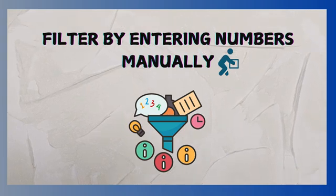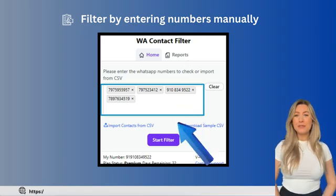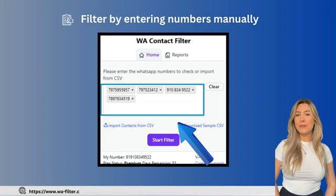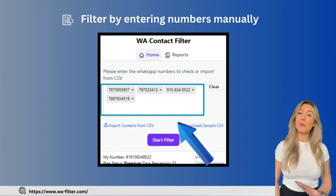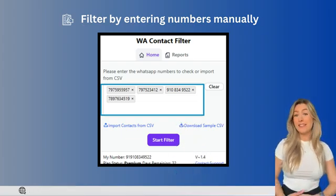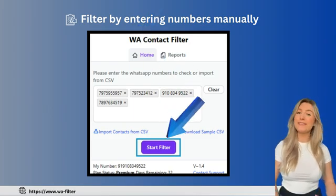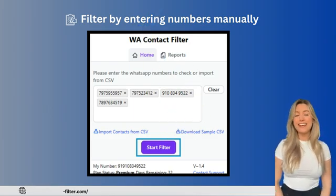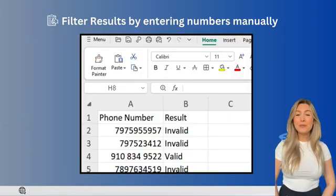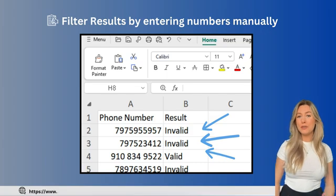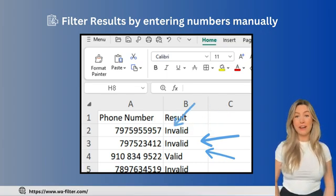Method 1: Use the extension to filter numbers manually. On the main interface, you'll see a field where you can enter phone numbers — type them in one at a time or separated by commas. Once your numbers are entered, click the Start Filter button to initiate the filtering process. After filtering is complete, a report will automatically download showing which numbers are valid and which are invalid, making it easy to identify active contacts.